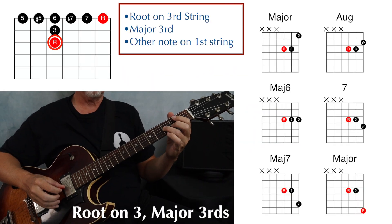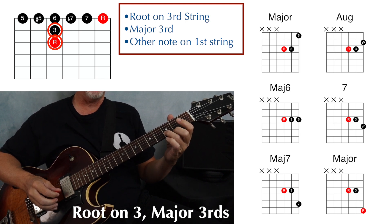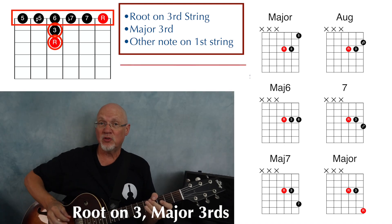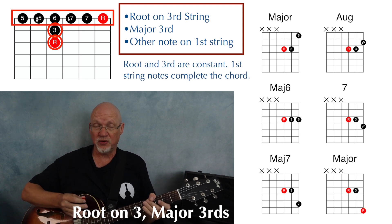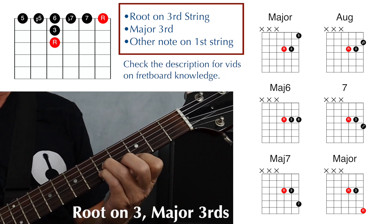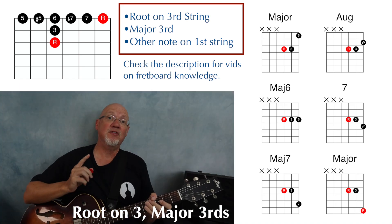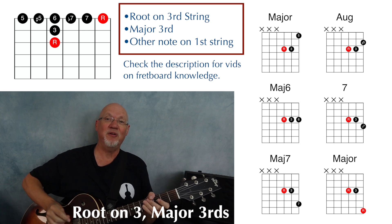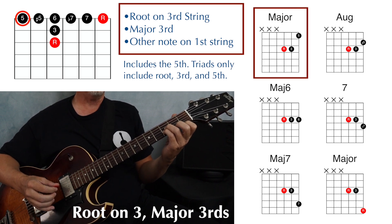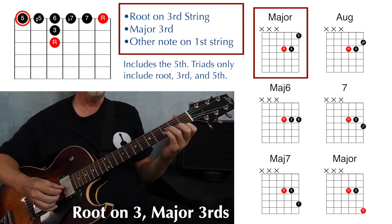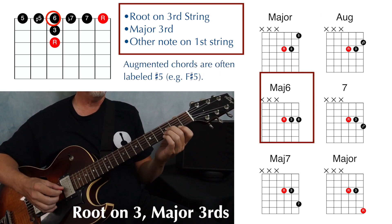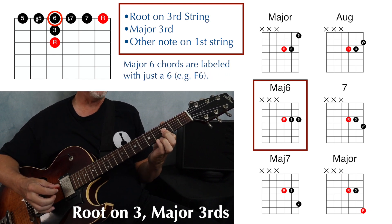Now we have a root on the third string, a major third on the second string, and then some other note on the first string. Again, the root and the third stay constant and we move that note on the first string to change the chord quality. These will all be different types of B flat chords, but you can move the root up and down the string. If I play root, third, and fifth, I have a B flat major chord — this major triad includes the root, third, and fifth with no seventh. If I change that upper note to a sharp five, I have an augmented triad. Move it again, I have a major six chord — B flat six.